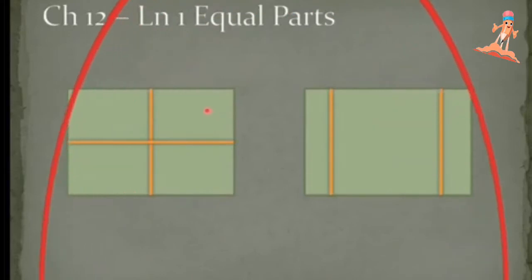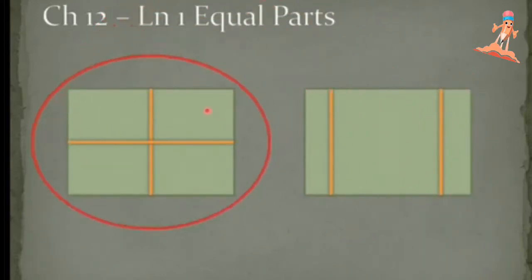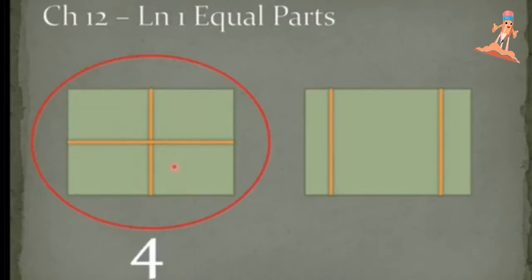Yes, it is this figure. Now tell me, how many equal parts are in this figure? Count with me: one, two, three, four — it has four equal parts. This other figure does not have equal parts because one rectangle is small and one is big, but here all four small rectangles appear to be equal.